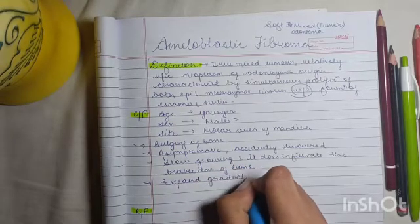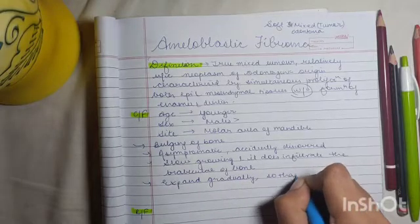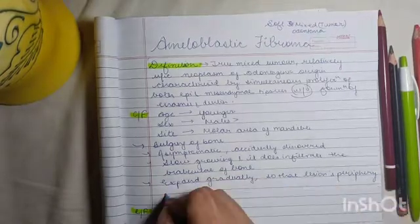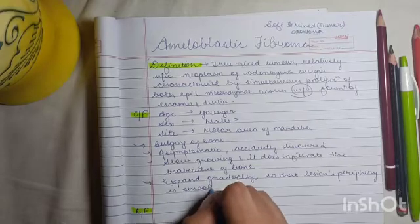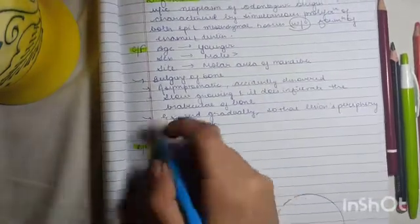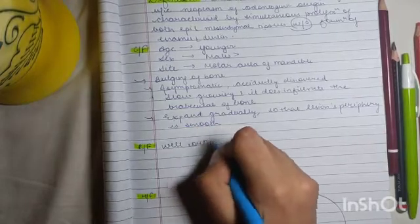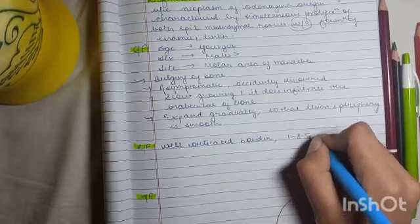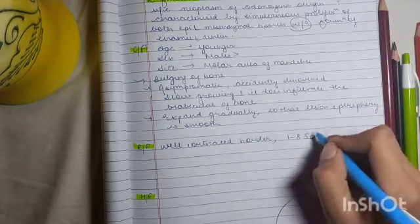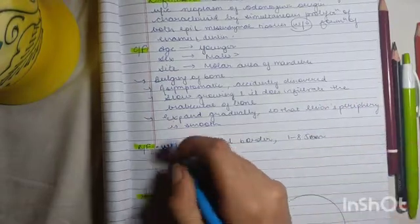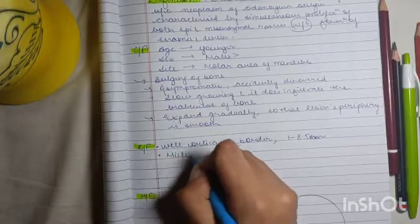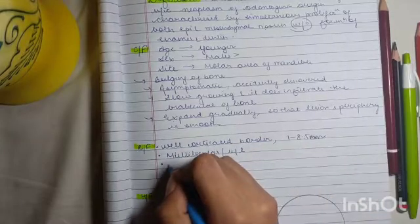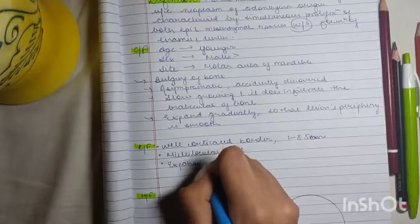Coming to the radiographic features: it has a well-corticated border. The diameter can vary from 1 to 8.5 millimeters. It can be multilocular or unilocular and can cause expansion of cortical plates.